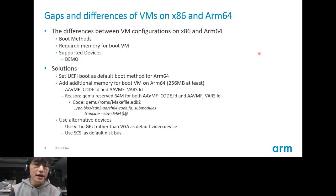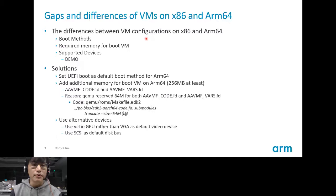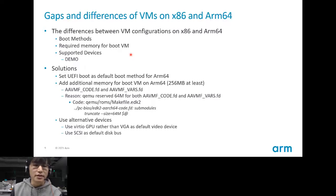This part is about the gaps and differences of VMs on x86 and ARM64. Generally speaking, there are three main differences. The first is boot method: ARM64 only supports UEFI boot, while x86 supports both UEFI boot and BIOS boot. Also, ARM64 needs more memory to boot a VM, which I will illustrate later. And ARM64 supports very limited devices compared with x86.